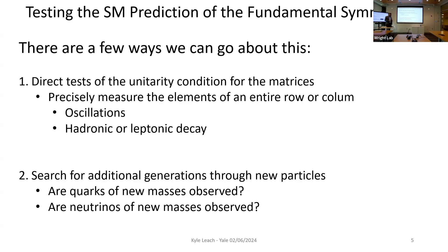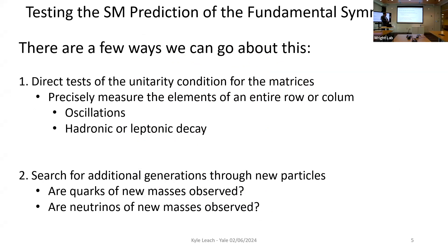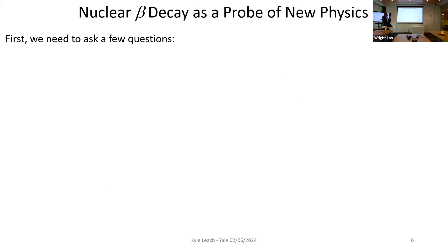There are a few ways to search for these departures. We can do direct tests of the unitarity condition by measuring the elements, squaring them, and adding them within their uncertainties—through oscillations and through hadronic or leptonic decay. We can search for additional generations through new particles. If the three-by-three paradigm is incomplete, you might extend from a 3x3 to an NxN unitary matrix. New quark masses haven't been observed—we'd expect to see strongly interacting signatures. New neutrino mass states are a more interesting possibility because neutrinos are very hard to detect.